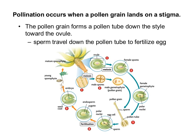Pollination occurs when a pollen grain lands on a stigma. That pollen grain has two cells in it — one of the cells creates a pollen tube that grows all the way down to the ovule. The second cell divides into two sperm, always only two, which travel down the pollen tube to the ovule where they can fertilize the egg.